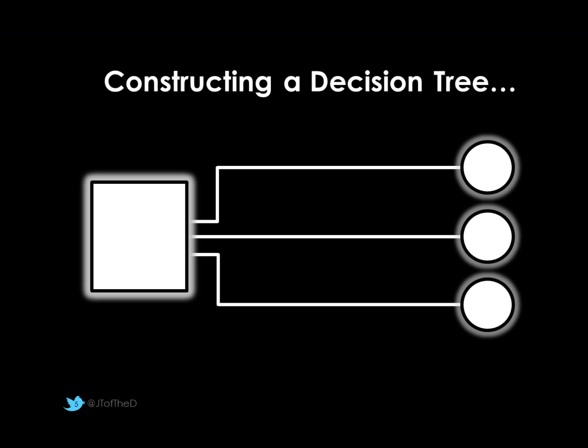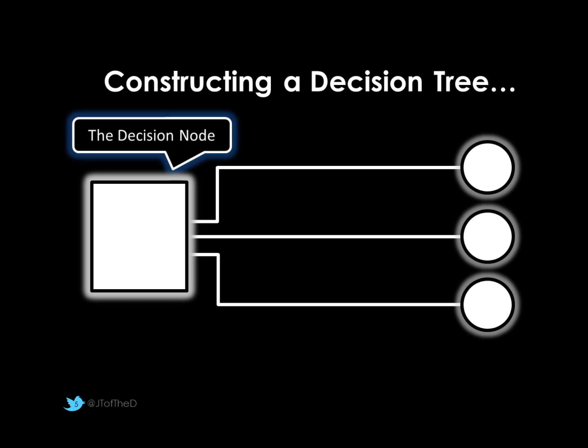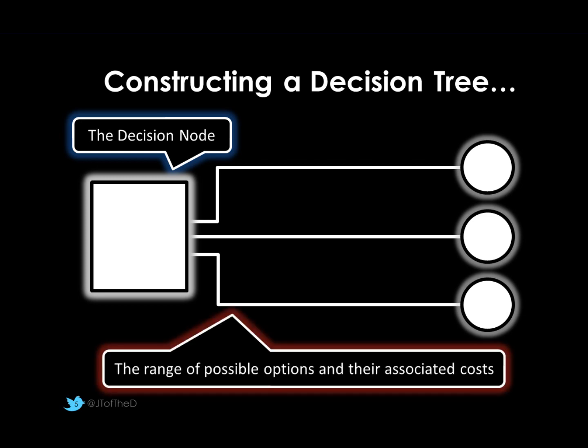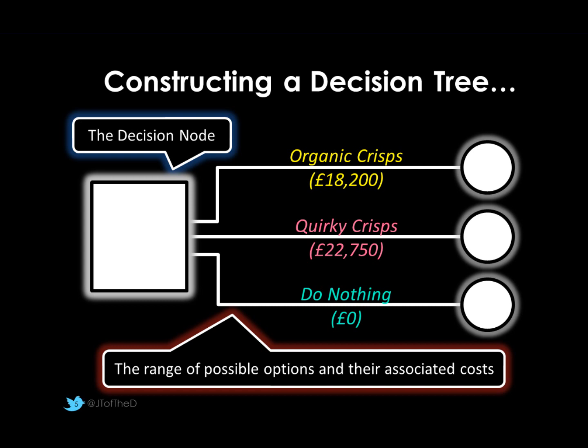The decision tree structure looks like this. The box on the left is called the decision node — it shows us that a question has been raised that we need to answer. The lines coming from the box show the number of different options we could take: organic crisps (colour coded yellow) or quirky crisps (pink), and we can't do both. There is always a third option — a business can decide to do absolutely nothing. Shown in brackets underneath each label is the cost of pursuing that option: organic crisps costs £18,200; quirky crisps £22,750; doing nothing costs nothing. The figures are in brackets because they are a cost rather than a revenue, and that's important later on.